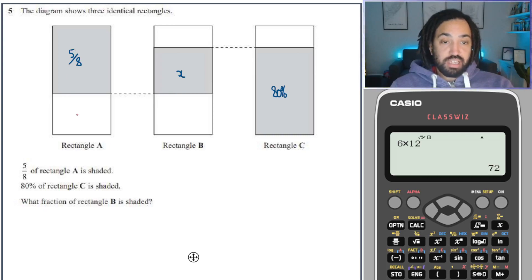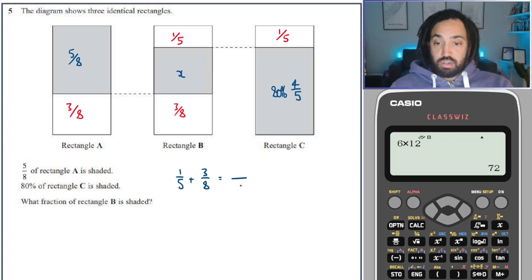Well, what we're going to need to do is first figure out what's missing in each one. So if there's 5 eighths over here, that means there's 3 eighths unshaded. And this one is 80%. I'm going to write it as a fraction because, well, this is a fraction question. So that's 4 fifths is 80%, which means that 1 fifth is missing over here. Okay. So let's look at these missing sections. Well, this must also be 1 fifth. And this must also be 3 eighths because they're the same rectangles.